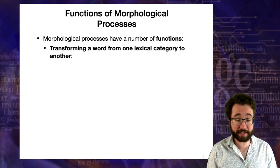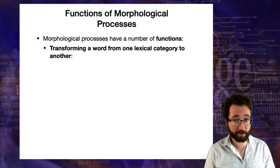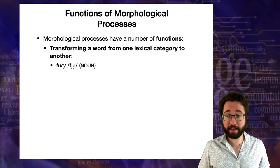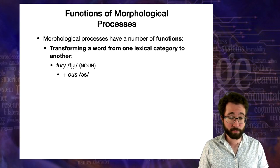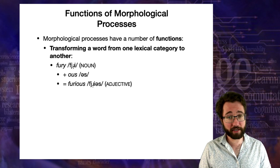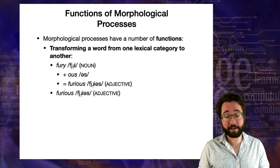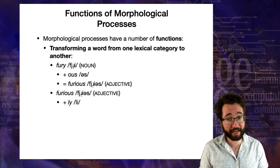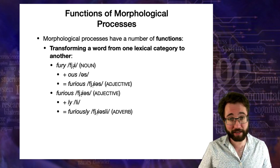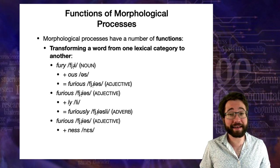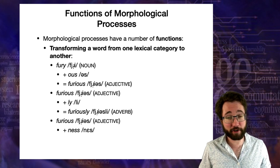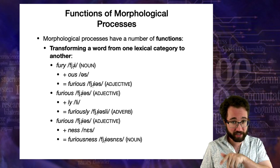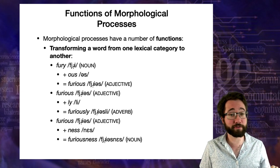One very common function of a morphological process is to take a word in one lexical category and transform it into another. For example, we have the noun 'fury' in English. We add the suffix '-ous', an affixation process, and the resulting word is the adjective 'furious'. Then we can add the suffix '-ly' to transform that adjective into an adverb: 'furiously'. Or we can add '-ness', which transforms an adjective into a noun, giving us 'furiousness'. So we took a round trip: starting with a noun, turning it into an adjective, then back into a noun using two different morphological processes.